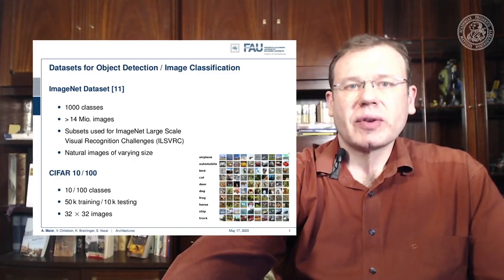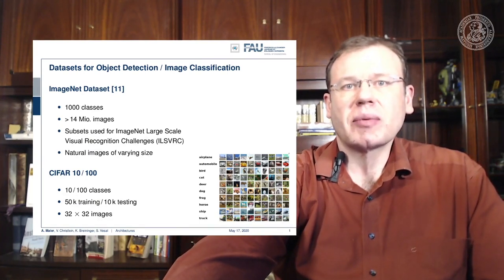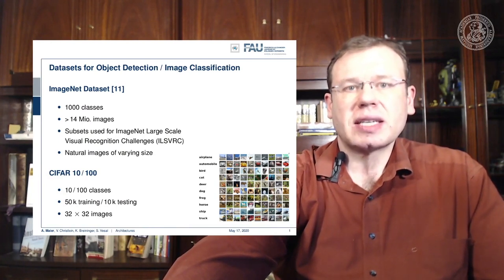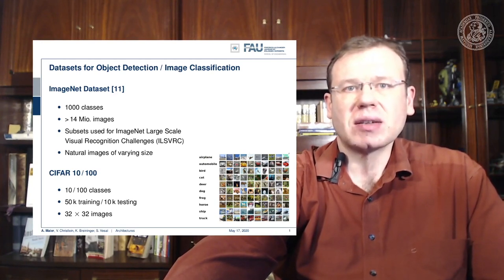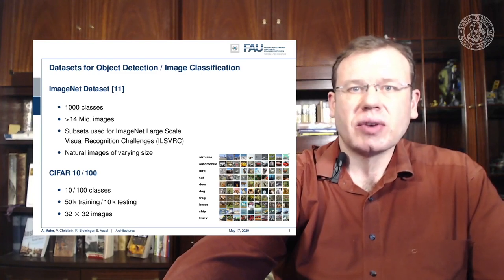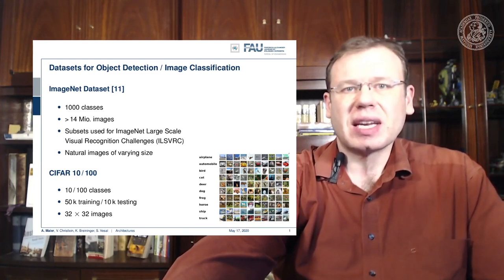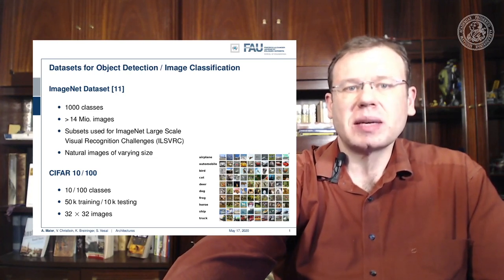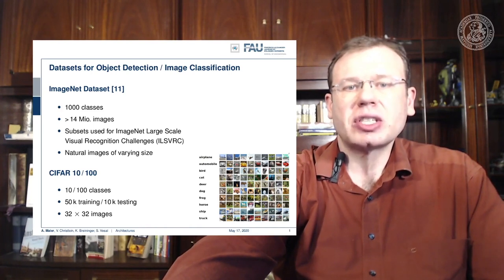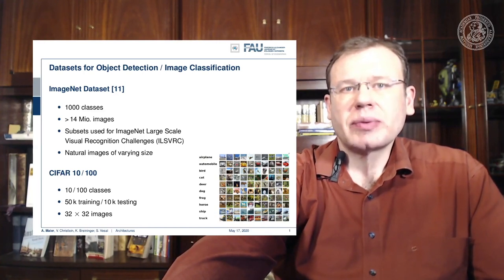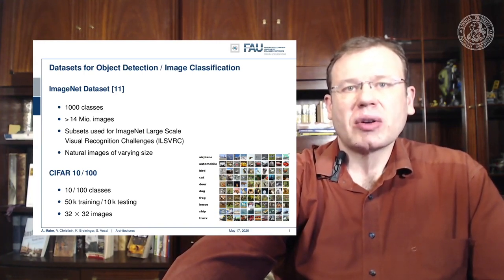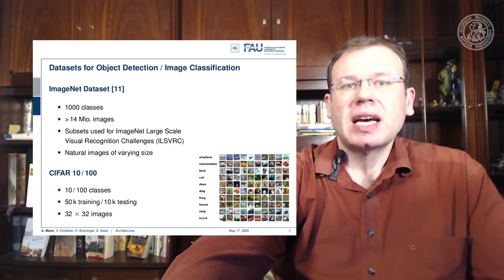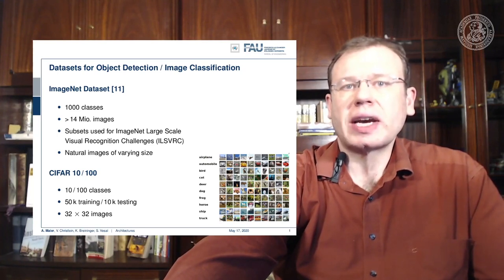Instead of what humans might need, just dozens of examples, these things will need millions. A lot of what we'll see in the next couple of slides and videos has been developed for image recognition and object detection tasks. In particular, two datasets are very important for these kinds of classes. This is the ImageNet dataset, which you find in reference 11.